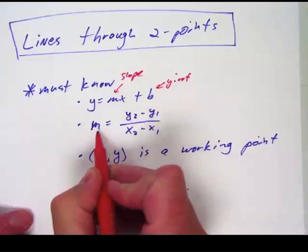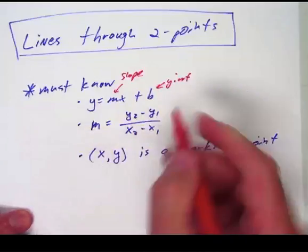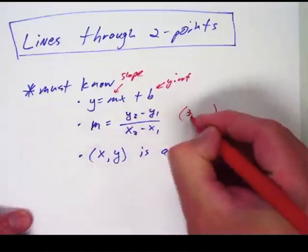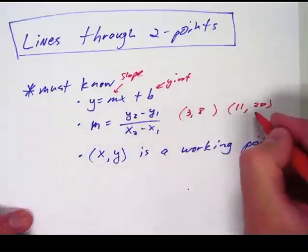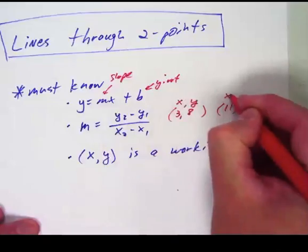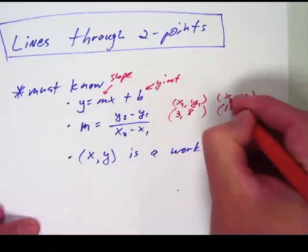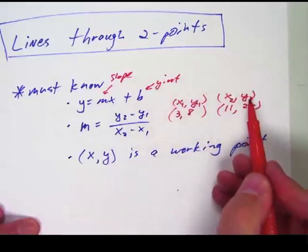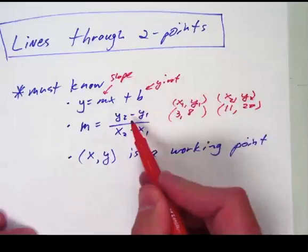So the slope formula, m stands for slope, is y sub 2 minus y sub 1 over x sub 2 minus x sub 1. And what that means is if I'm given points like 3, 8 and 11, 20, then these are just ordered pairs in disguise. This is an x and this is a y, this is an x and this is a y because that's how we do ordered pairs. Well if this is our first ordered pair, I call these x1 and y1 and this one x2 and y2. So I do y sub 2 minus y sub 1 over x sub 2 minus x sub 1, I plug those into the equation, I get the slope.